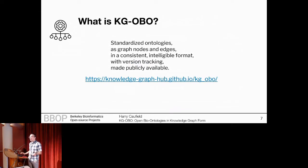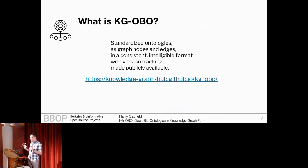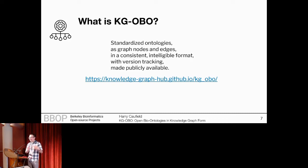So long story short, if this is a problem that you're facing, go ahead and visit the code to assemble OBO ontologies en masse into knowledge graphs. You get standardized ontologies as graph nodes and edges in a nice, consistent, intelligible format, complete with version tracking — so the versions are all kept. If they don't adhere to exactly the same expected format, well, we assign them a version. We're actually a little bit more permissive than the OBO Foundry itself is in terms of retaining versions, in that we will freely assign the date that a new version came out if one isn't provided in a consistent structure. And most importantly, they are all publicly available on the internet.